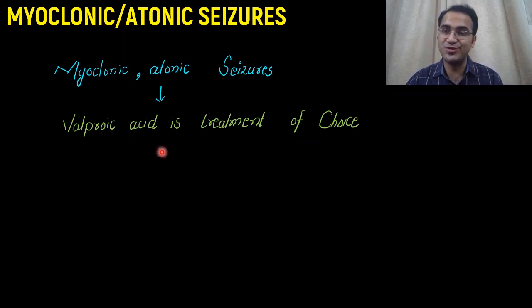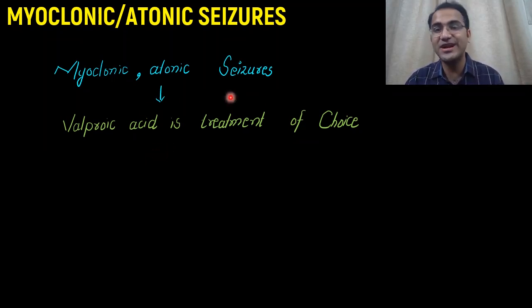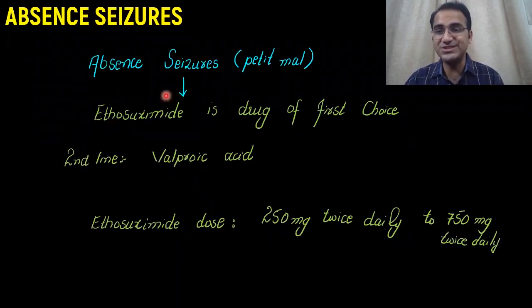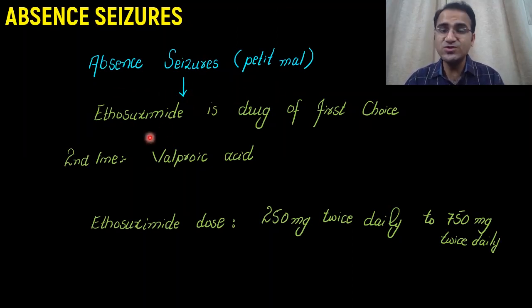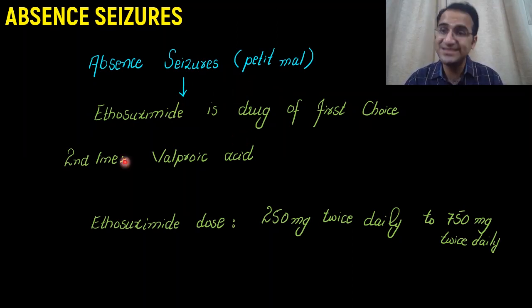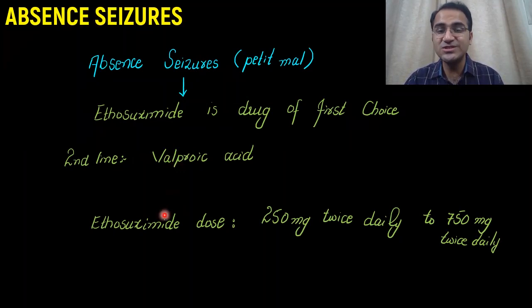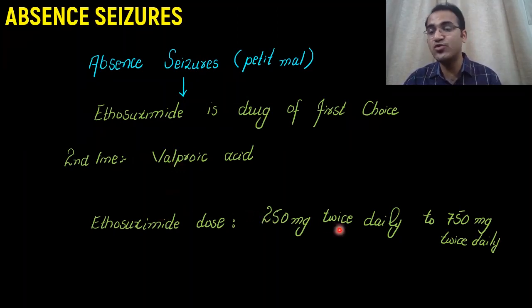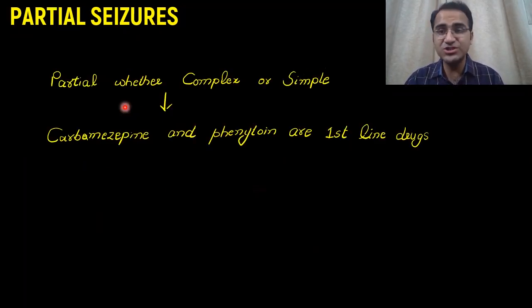Check CBC and LFTs at two-week intervals for the first 2 to 3 weeks to look for bone marrow suppression and hepatotoxicity, as these drugs are also hepatotoxic. For myoclonic or atonic seizures, valproate acid is also the treatment of choice. In absence seizure, also called petit mal seizure, ethosuximide is the drug of first choice, with valproate acid as second line.